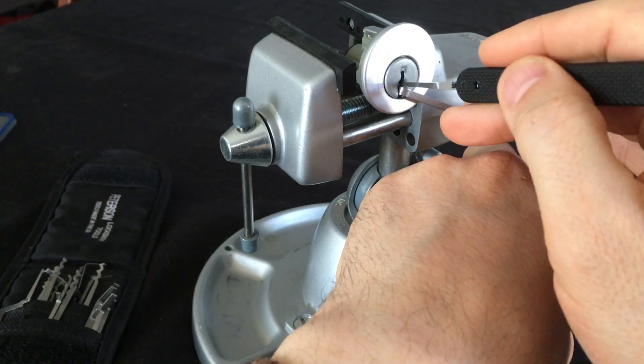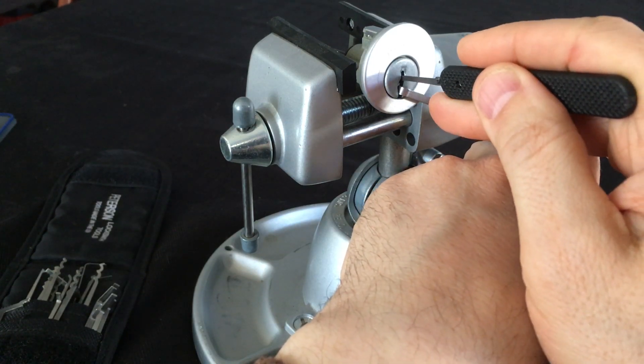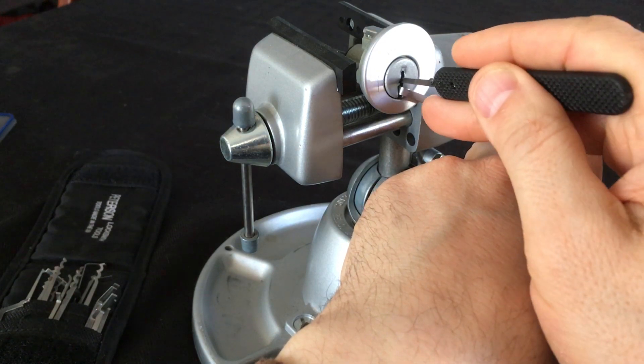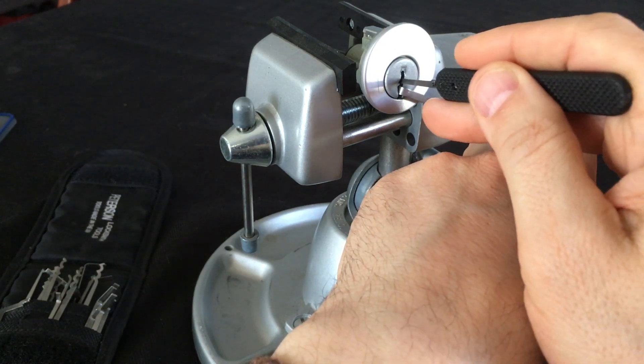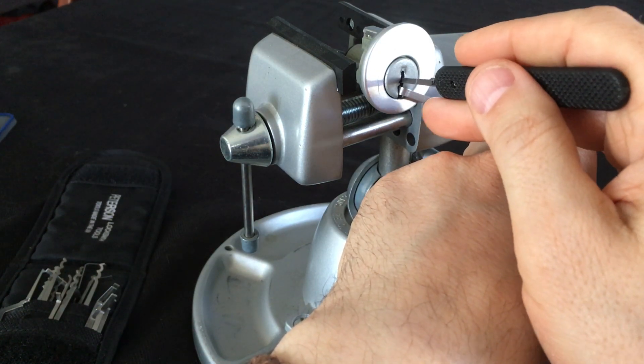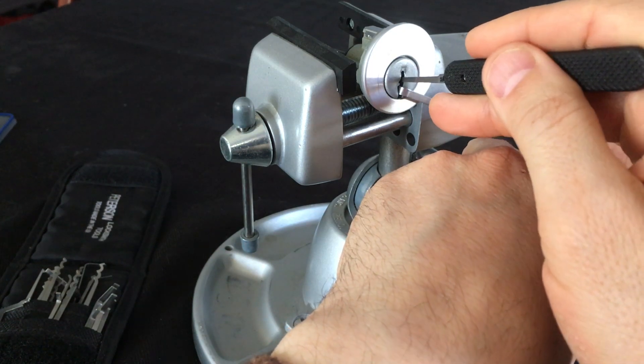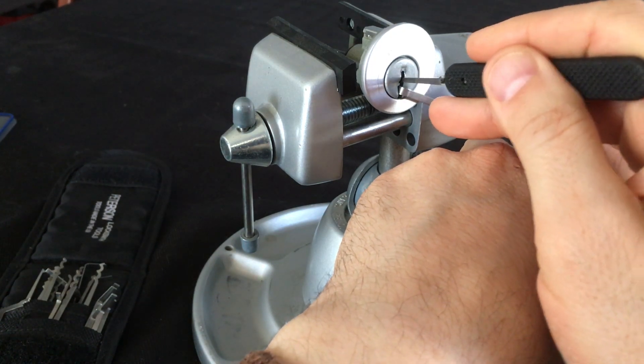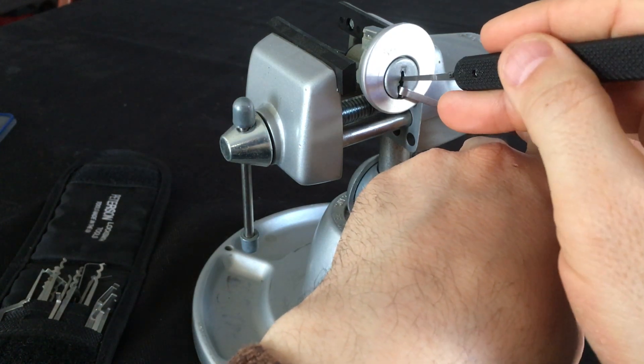I didn't use a Peterson feeler gauge or long knife or anything like that. I used a cut up piece of can, aluminum can or something, whatever they make it out of these days. And I did get it open and that was cool.